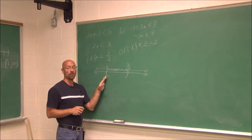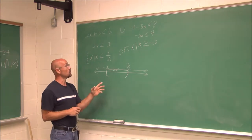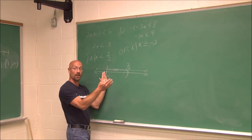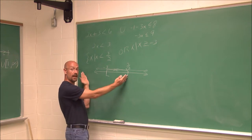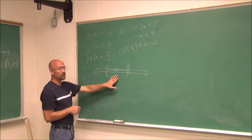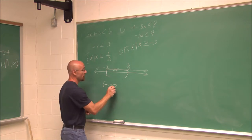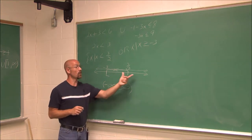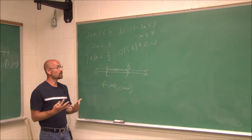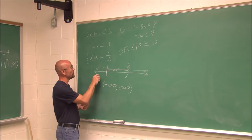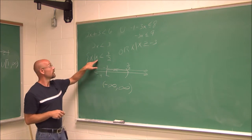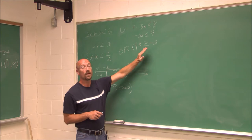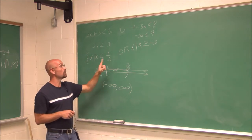Here we have an example where we get all real numbers — any value will solve one or the other. The values from negative 3 to positive infinity are in one set, or we have 3/2 to negative infinity in the other. So we have to be careful and realize we can have all real numbers as a solution. For example, if I pick negative 4: negative 4 is less than 3/2 — true — it solves that one. It doesn't solve the second one, but it solves one or the other.